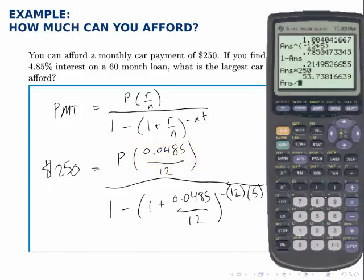If I divide this by 0.0485 divided by 12, making sure to keep my parentheses there, that is P.